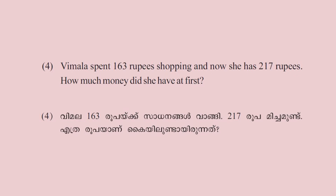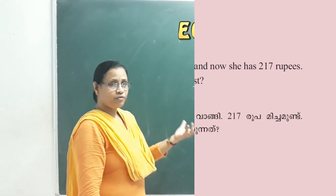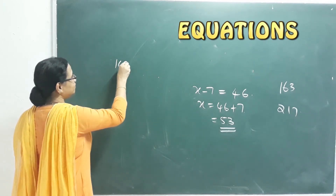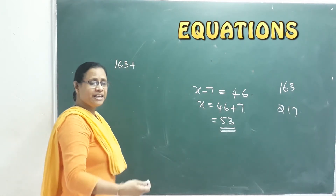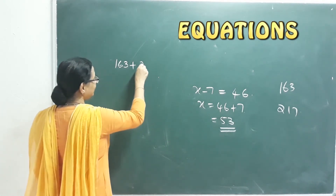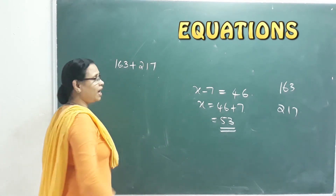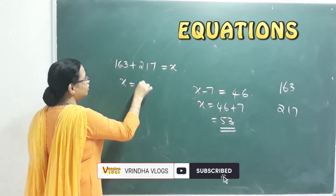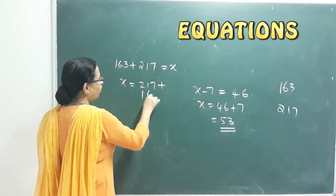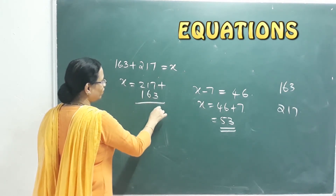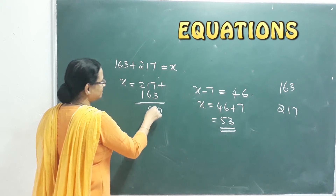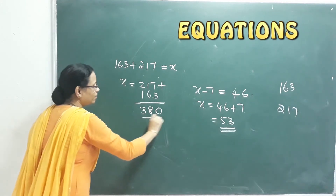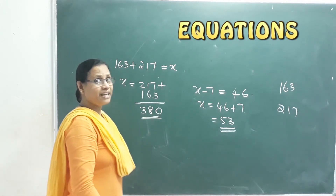46 plus 7 — add these two — 53 bananas. Vimala spent 163 rupees shopping and now she has 217 rupees. How much money did she have at first? Vimala's total is the remaining amount 217 plus the spent amount 163.